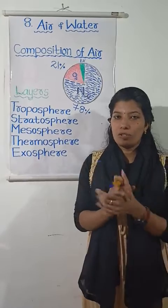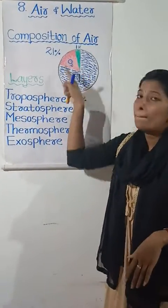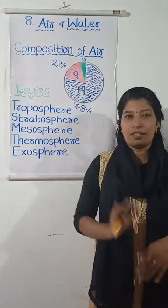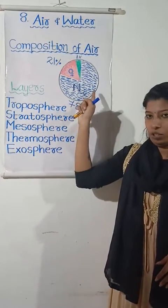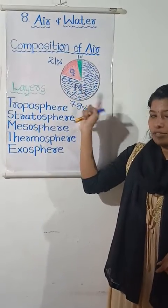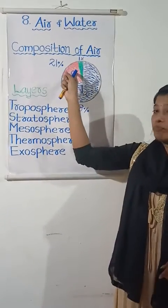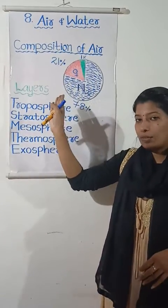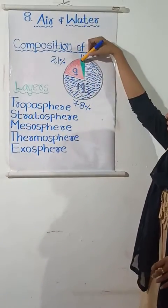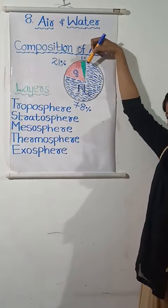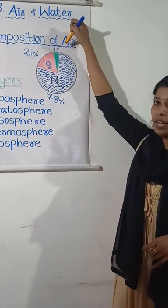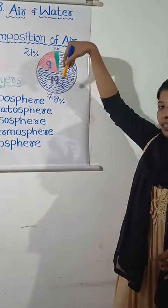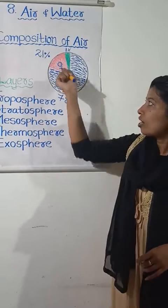Now that we have studied about the air composition, let us see it in a pie chart. We know that air surrounds us as a mixture of several gases. Here, the blue section shows nitrogen — that means 78% nitrogen is present in the atmosphere. The red section shows 21% oxygen present in the atmosphere. And the green color shows the remaining 1% of other gases. So, 99% of air is constituted by nitrogen and oxygen combined.